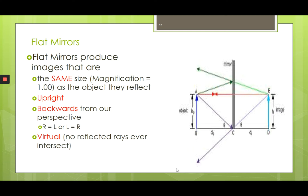Another important word when describing your image is that it's virtual. Rays don't actually pass through the mirror, but your image appears on the other side of the mirror — that's called a virtual image. It's more of a projection of where that image would be. Whereas if the light actually does go there and an image is formed, that's called a real image. Virtual images cannot be formed on a screen — you can only view them through your eyeball or a camera.